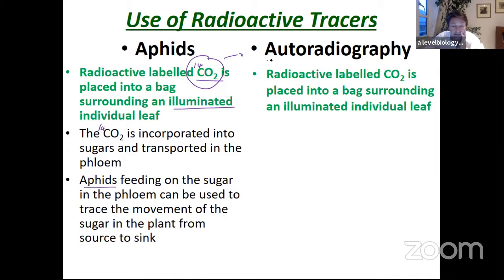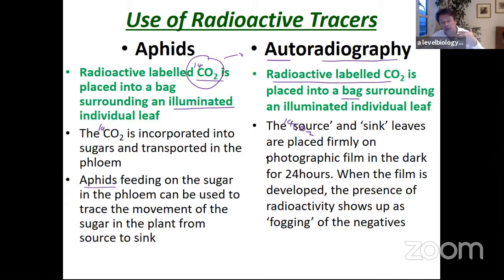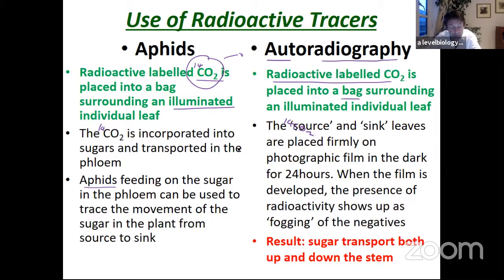Autoradiography: you take radioactive-labelled carbon dioxide, put it in a bag around a leaf, and photosynthesis fixes the carbon-14 into sucrose. You then place the plant onto photographic film and leave it in the dark. When you develop it, you can see where the radioactivity is — because the carbon-14 fogs the film like an X-ray — showing where the labelled sucrose has been transported. This demonstrates that sugar moves both up and down the stem.